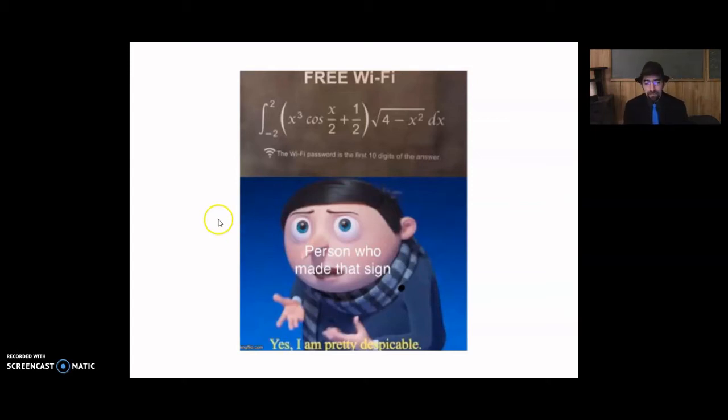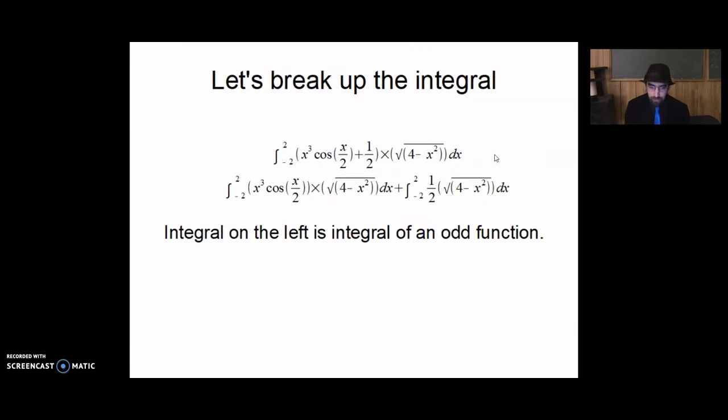But the key to this is we first have to break up this integral. Integral negative 2 to 2 x cubed cosine x over 2 plus 1 half all in parentheses times square root 4 minus x squared dx. We first break that up into this x cubed cosine x over 2 plus 1 half. That gets multiplied, the x cubed cosine x over 2 that gets multiplied by the square root function, and the plus 1 half that gets multiplied by the square root function.